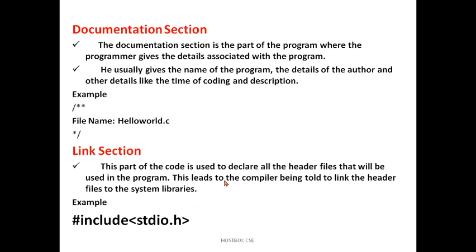The link section is the part of the code where you declare all the header files that will be used in the program. It tells the compiler to link the header file to the system libraries — this is the main important one. Whenever you write a C program in any IDE, whether it is Code::Blocks or Dev C++, you start with the link section: that is #include <stdio.h>. This is the header file, also called a preprocessor directive.